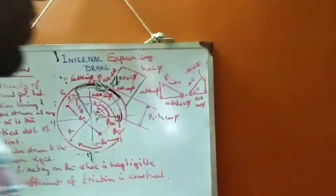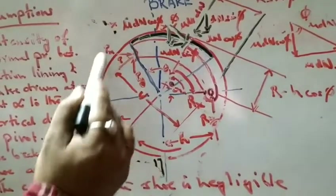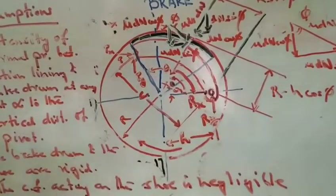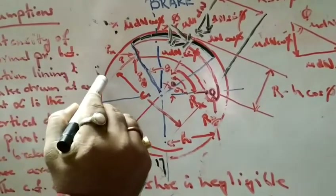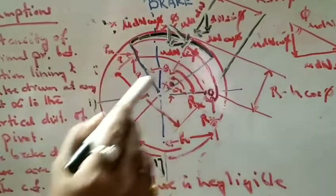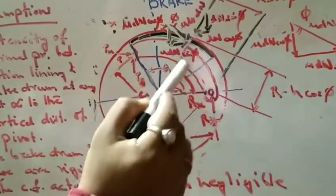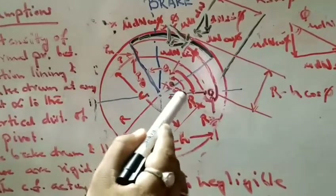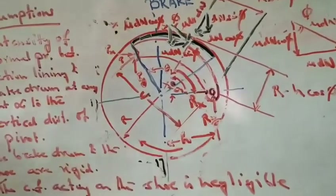Please look at the board. This is the internal expanding brake. You can see the drum, the brake shoe with the friction lining, and the radius of the drum. This is the applied force P broken into components Px and Py. The frictional force mu*dn is divided into components mu*dn*sin(phi) and mu*dn*cos(phi). The normal reaction dn is also broken into components dn*sin(phi) and dn*cos(phi). The friction lining extends from theta_1 to theta_2.